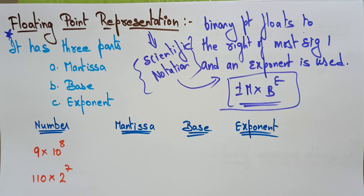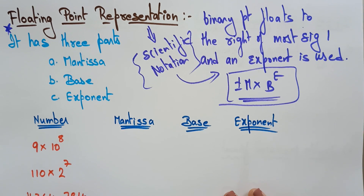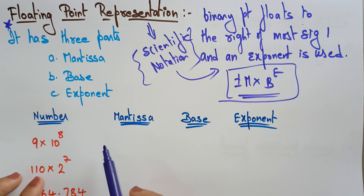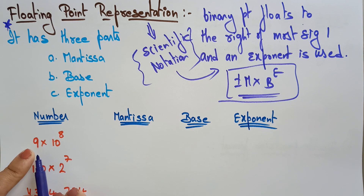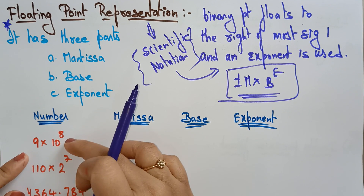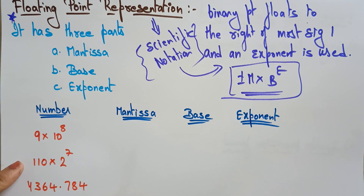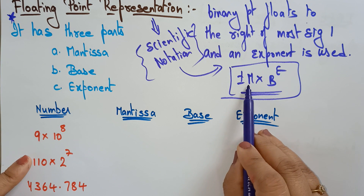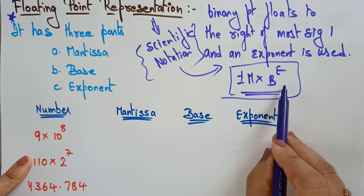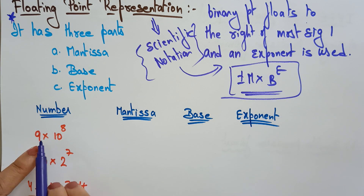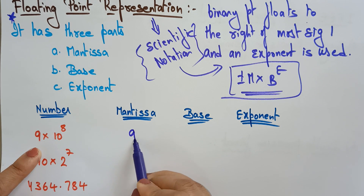I have taken some examples to show how to represent a number — whether it is a decimal number or a binary number — in floating point. So this number, 9 into 10 power 8, is already in floating point representation, that is scientific notation. It is in the form of plus or minus m into b power e, where m is the mantissa — here m is 9.